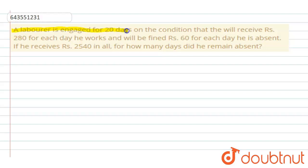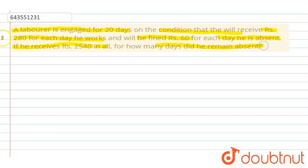The question says that a laborer is engaged for 20 days on the condition that he will receive rupees 280 for each day he works, and will be fined rupees 60 for each day he is absent. If he received rupees 2540 in all, for how many days did he remain absent? So in this question, a laborer is engaged for 20 days, receives 280 rupees each day for work, and is fined rupees 60 for each day he is absent, receiving a total of 2540.